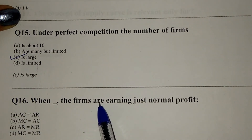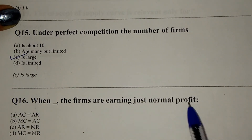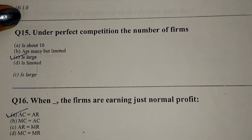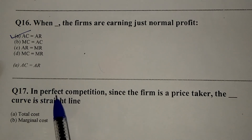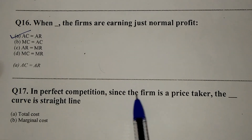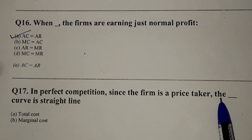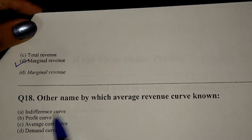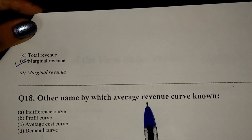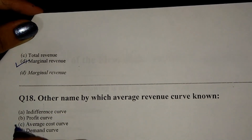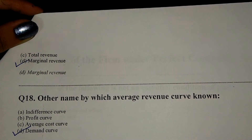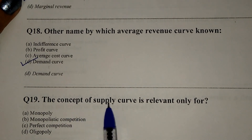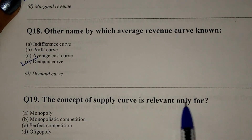When the firms are earning just normal profit, that is option A: AC equals AR. In perfect competition, since the firm is a price taker, the demand curve is a straight line — the marginal curve, option D. Another name by which the average revenue curve is known is the demand curve — option D. The concept of supply curve is relevant only for option C: perfect competition.